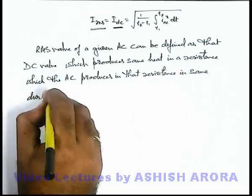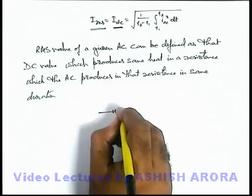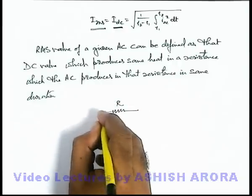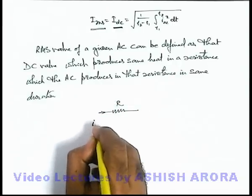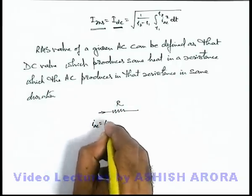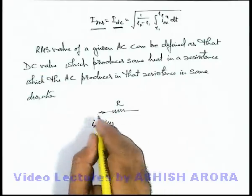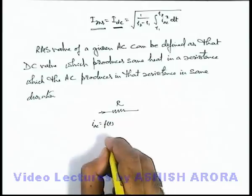That means if we are given with a resistance R and a time varying alternating current f of t is flowing, then for a given duration delta t, we can directly write